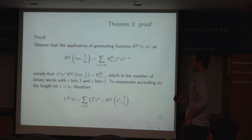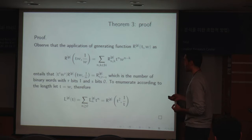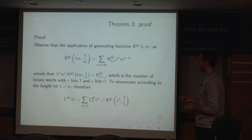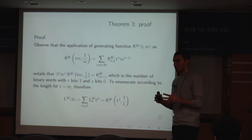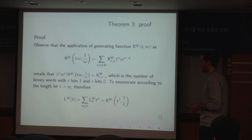For the proof, we manipulate and instantiate the provided generating function R in order to extract a coefficient that allows us to obtain R(r, r minus s), which counts binary words avoiding pattern P with r bits 1 and s bits 0. Since we are requiring to count according to length, we unify both variables. Therefore, we set t equal to w and instantiate R with t-squared and 1 over t. This gives our definition for generating function L.